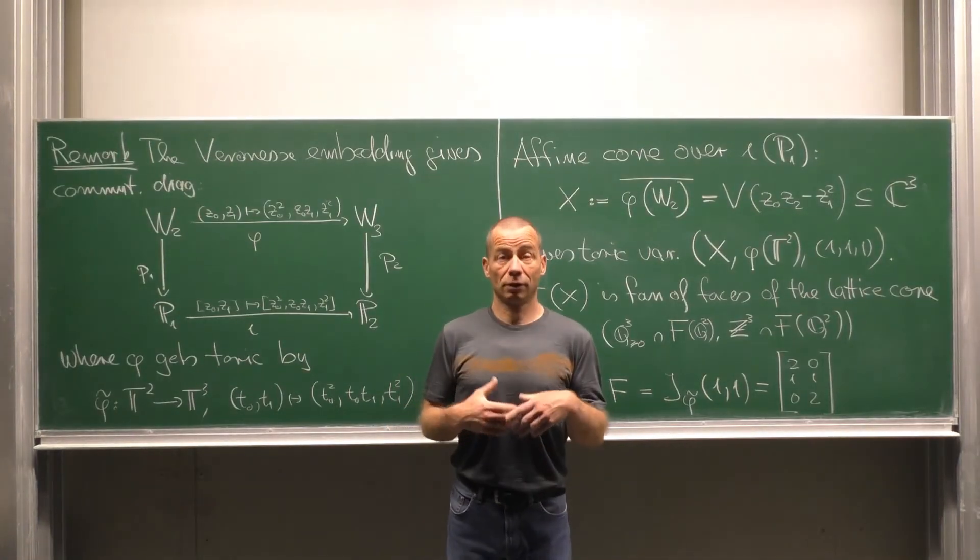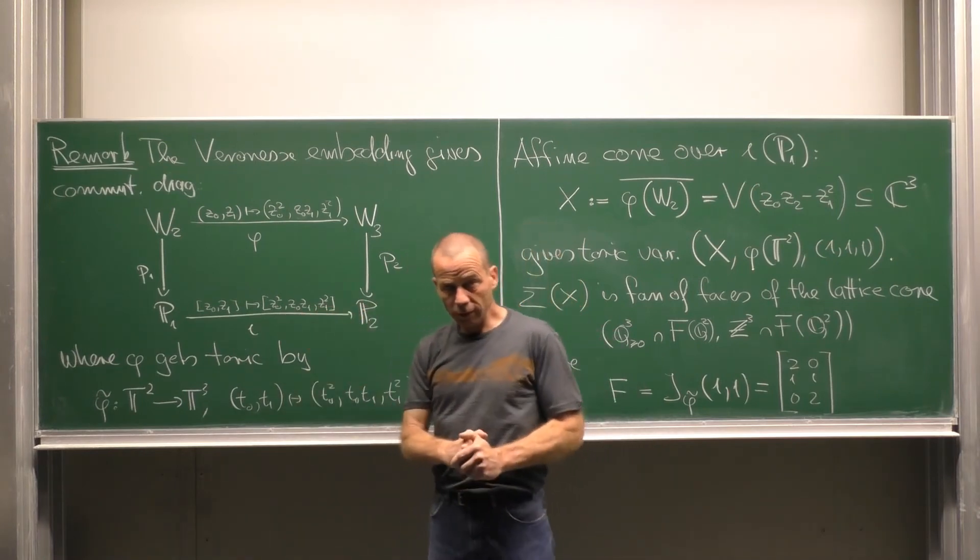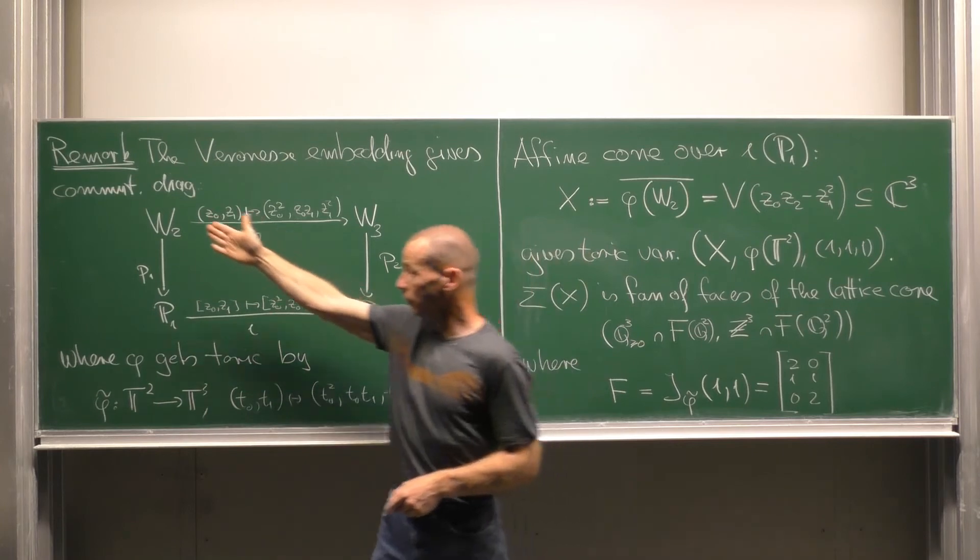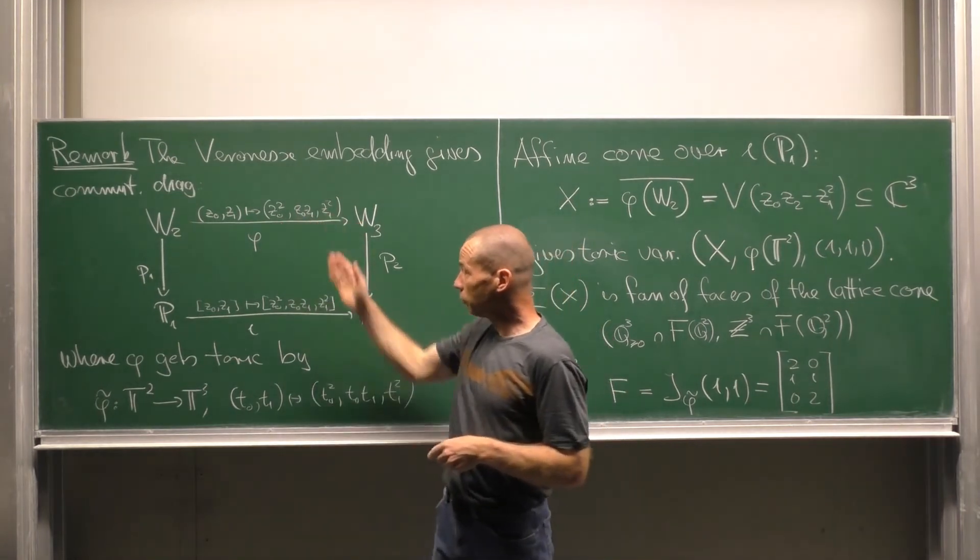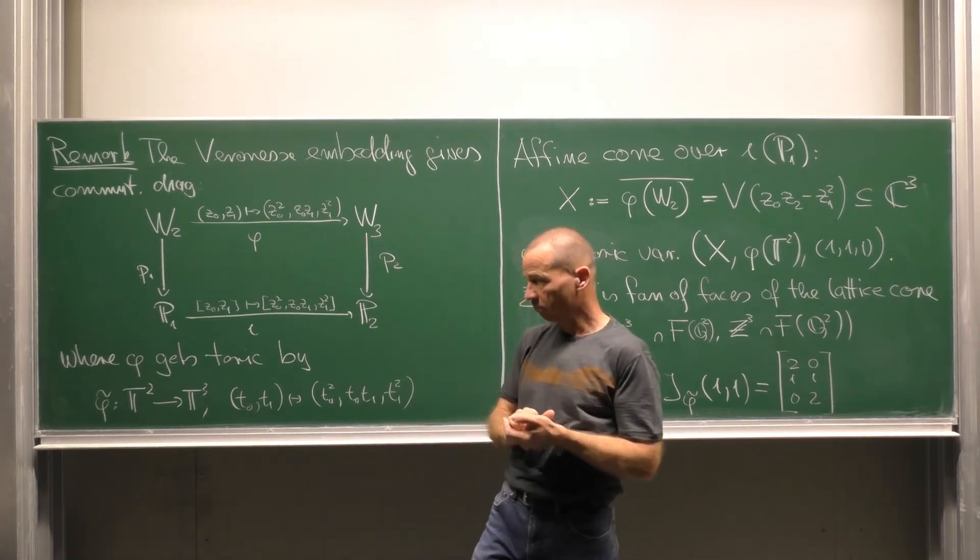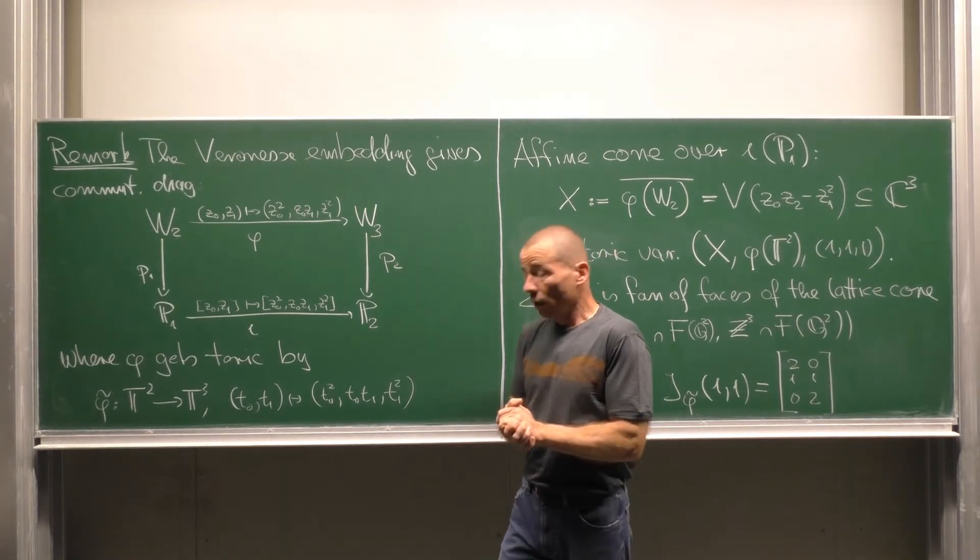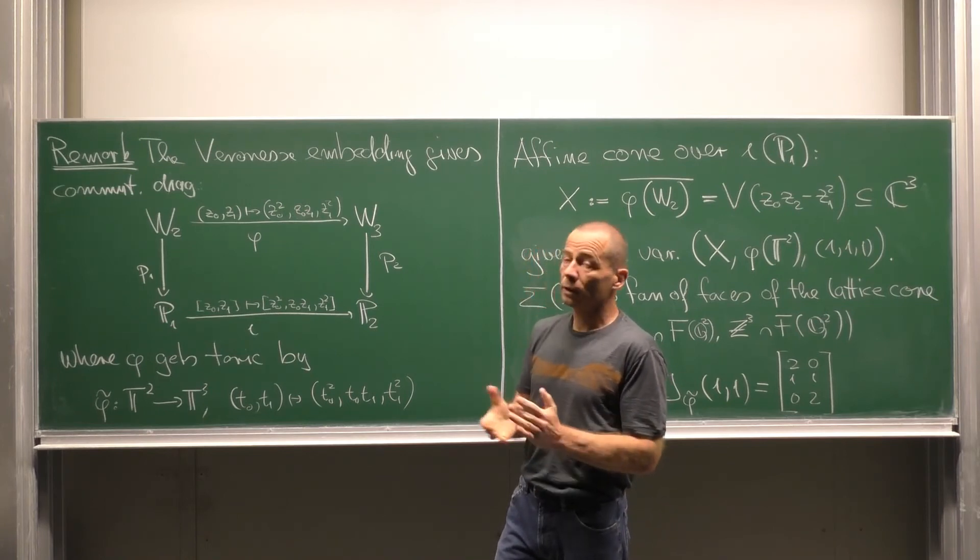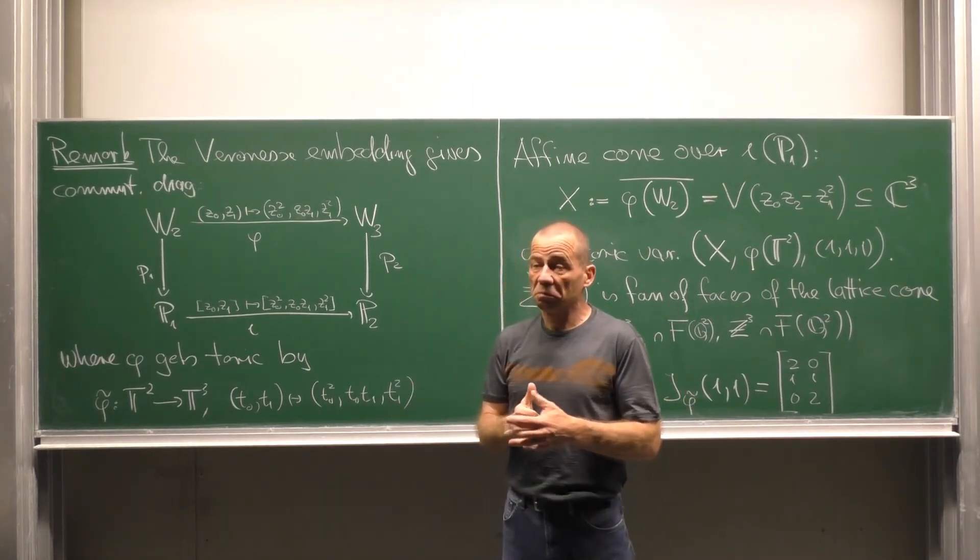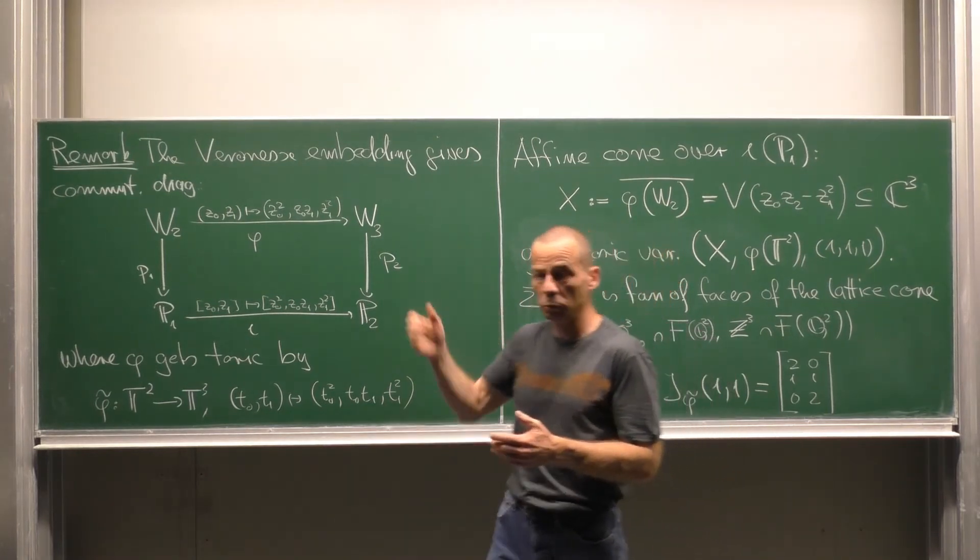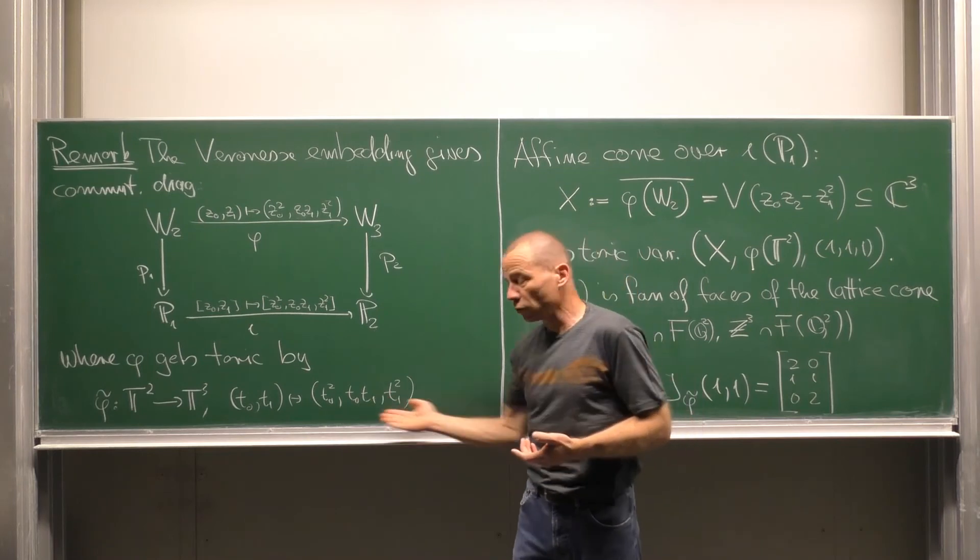The Veronese embedding gives us the following commutative diagram. From P¹ to P² we go via the Veronese embedding. Then we look at the tautological maps on both sides and just lift the Veronese embedding by taking the same monomials for the map phi above. This phi above, this lifting, also is a toric morphism. We need the accompanying homomorphism of tori. Now here we have a monomial map between C² and C³. Basically we removed zero. But this means that the accompanying homomorphism of such monomial map is just the monomial map again.